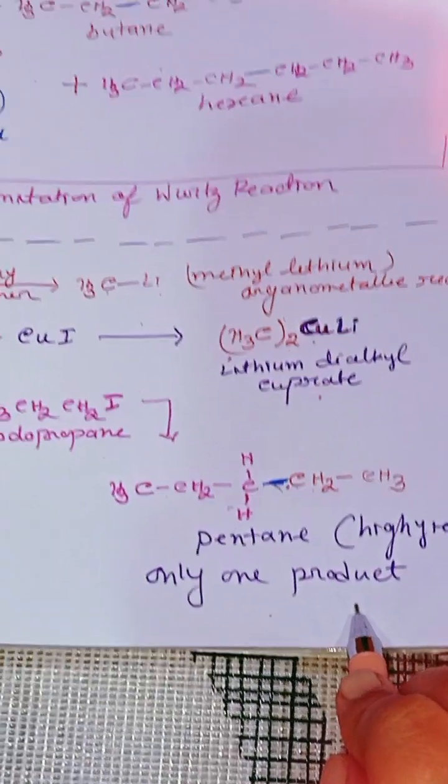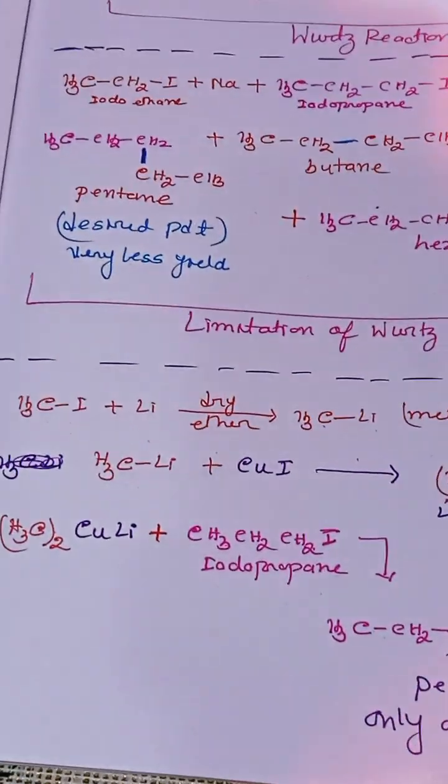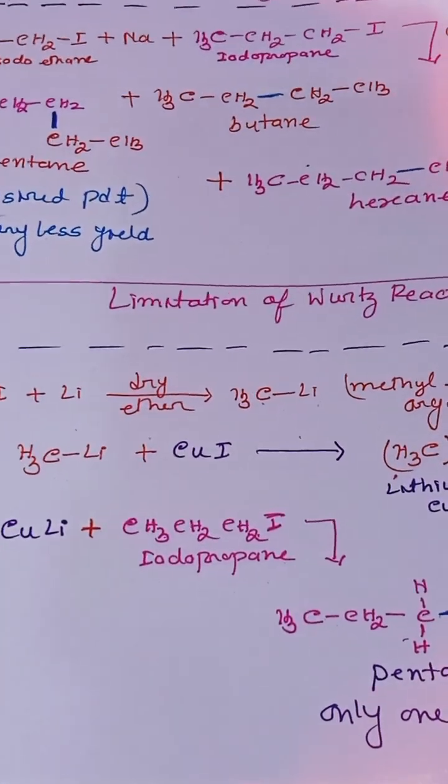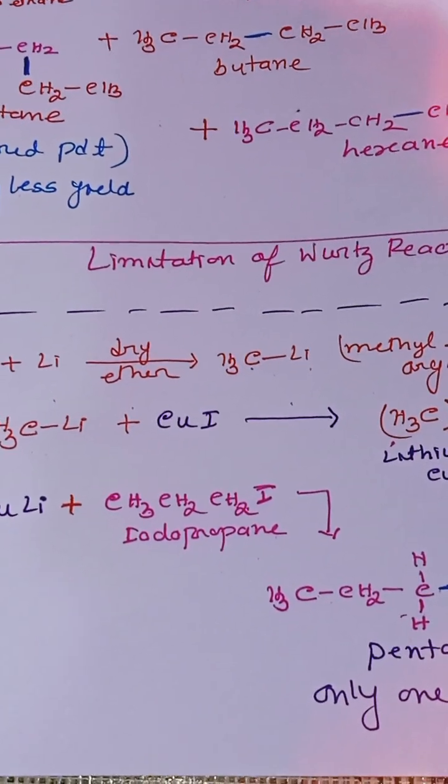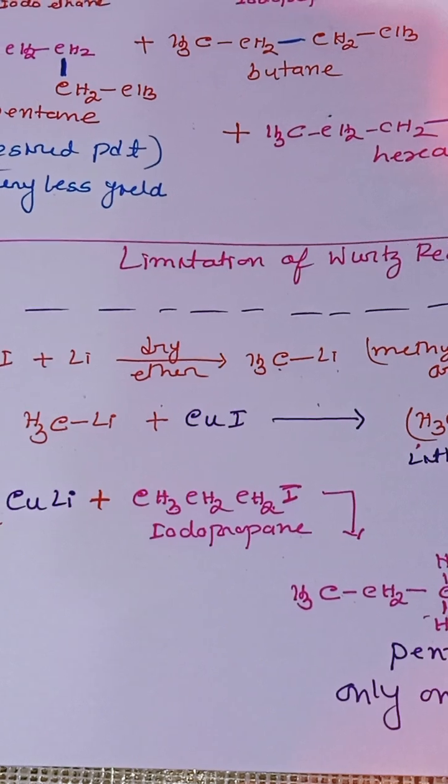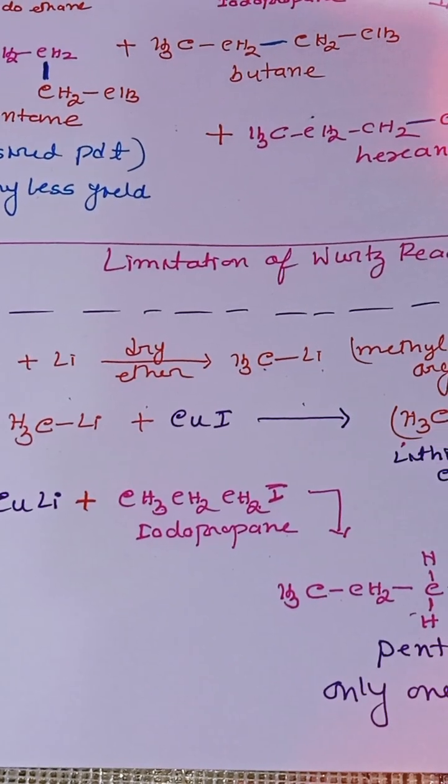Here only one product forms, that is pentane. That's why the Corey-House reaction is important to synthesize alkane compounds using unsymmetrical or different alkyl halides.